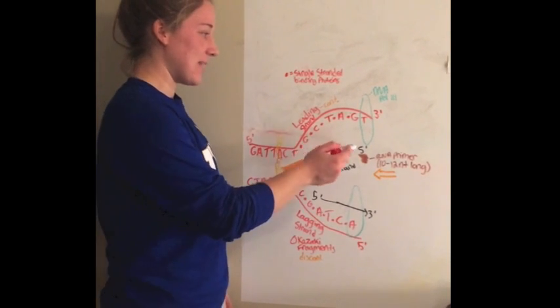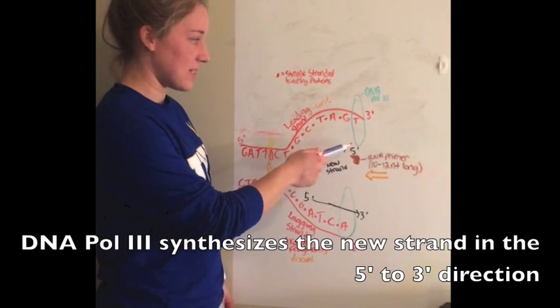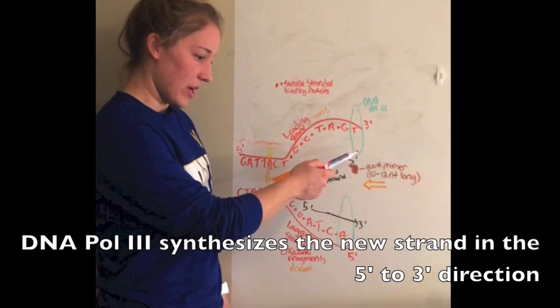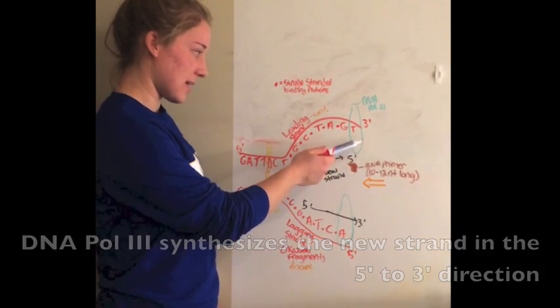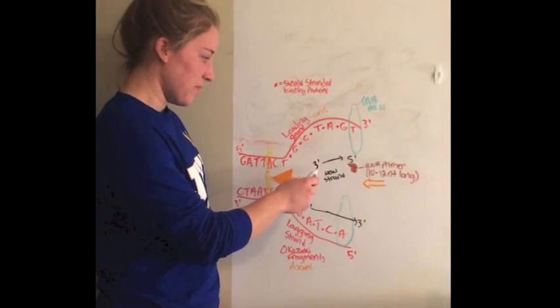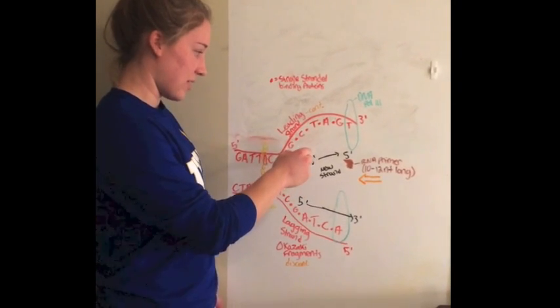DNA polymerase 3, its function, it binds onto the DNA strand and it essentially adds new nucleotides to the growing strand. So the new strand is represented here.